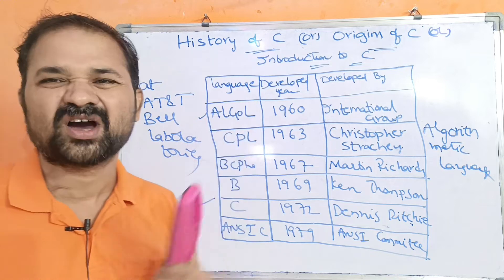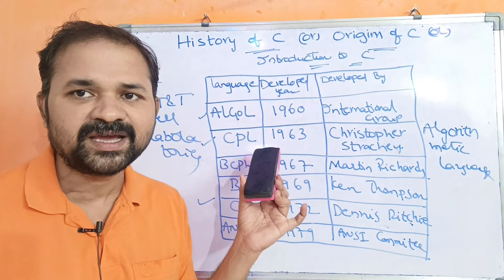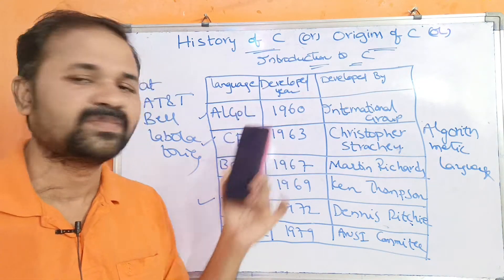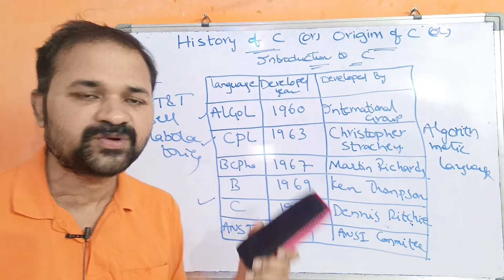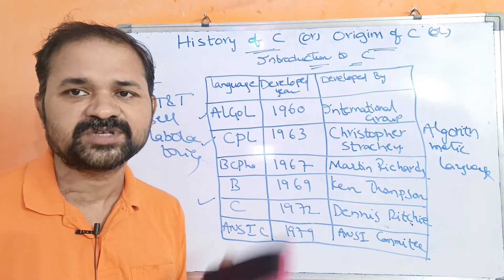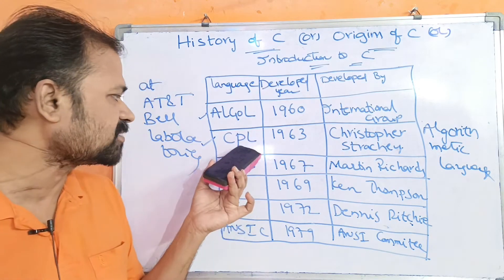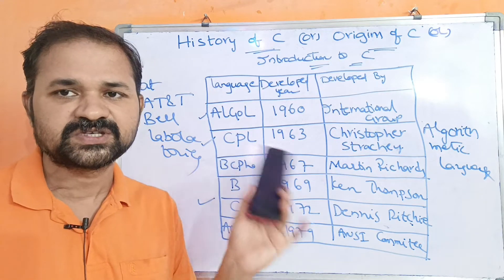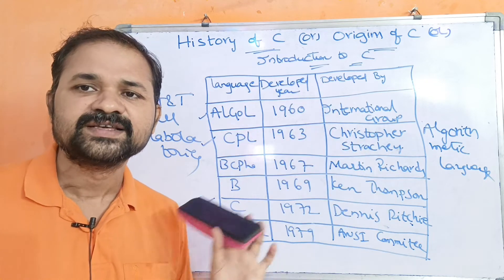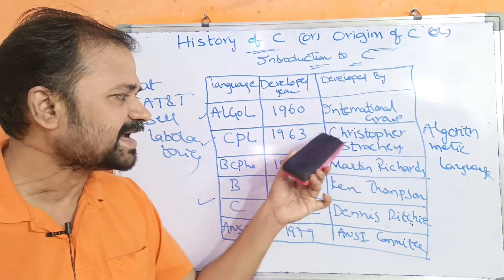There are many problems in ALGOL, so CPL was designed. CPL was derived from ALGOL. CPL has its own features as well as it supports all the features of ALGOL. CPL was developed by Christopher Strachey in 1963.